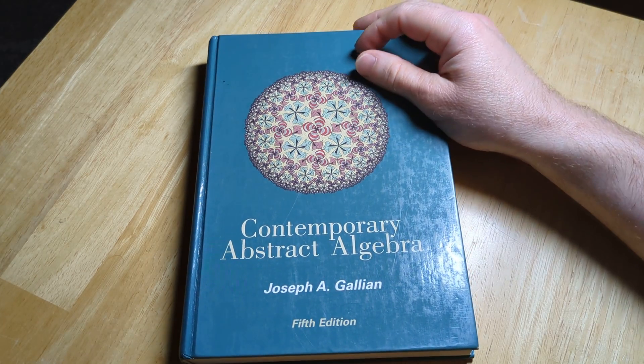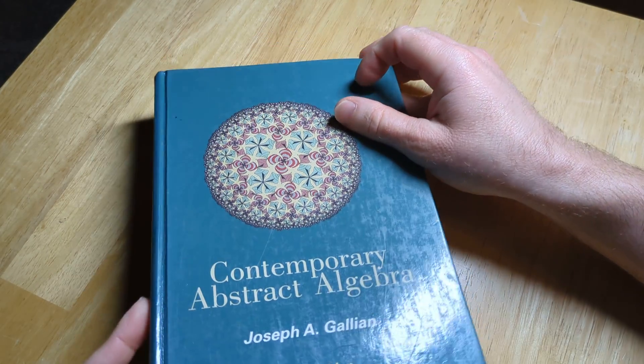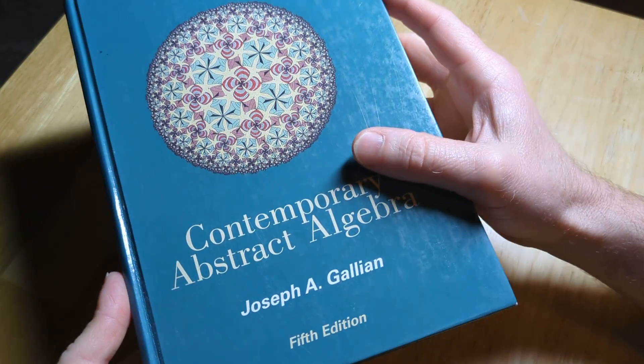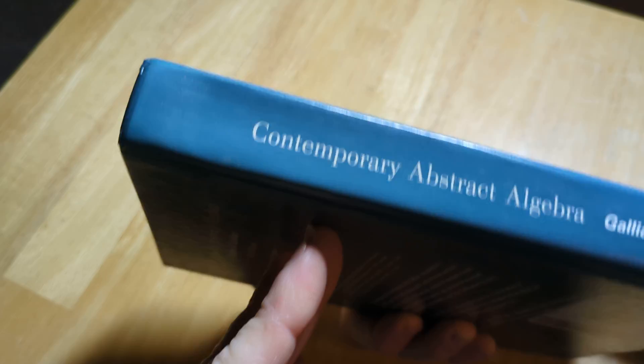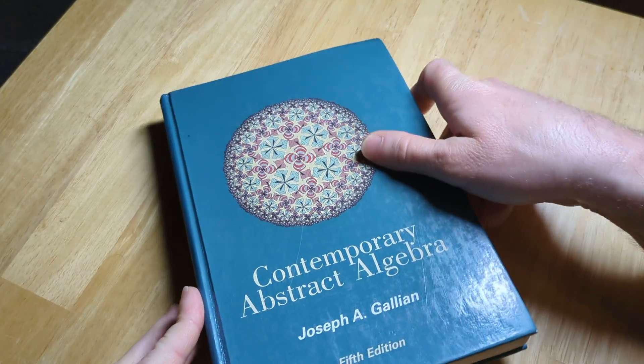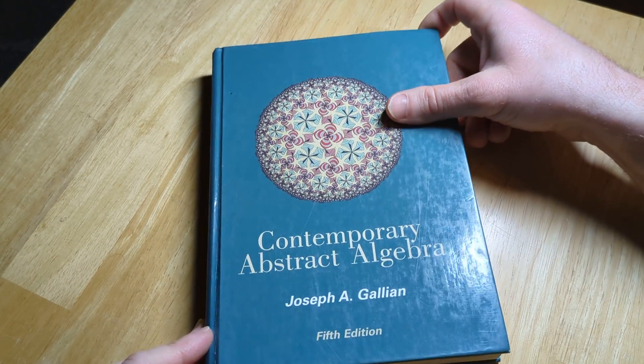Hi, in this video we're going to look at this book. It's called Contemporary Abstract Algebra. It was written by Joseph A. Gallion. This is the fifth edition. This book has been reprinted many, many times and it is a classic book.